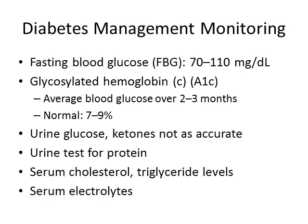Urine glucose testing — which can also look for ketones — is not very accurate since it can reflect abnormal nutrition rather than true glucose status. Blood sugars are generally over 180 before glucose spills into urine. If urine protein is positive, a 24-hour urine should be done to check for nephropathy. Serum cholesterol and triglycerides are also monitored to assess for metabolic syndrome, as these patients are at high risk for atherosclerosis and cardiovascular disease. Serum electrolytes are also important, especially related to DKA or HHS.